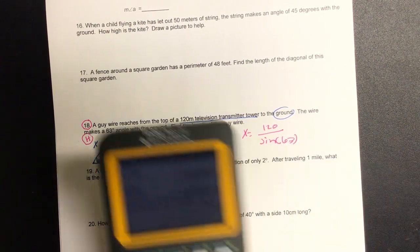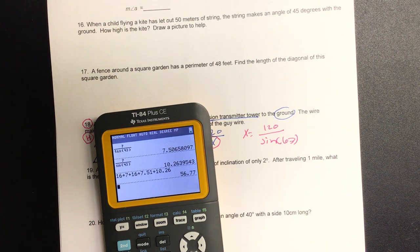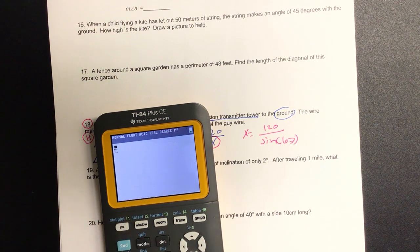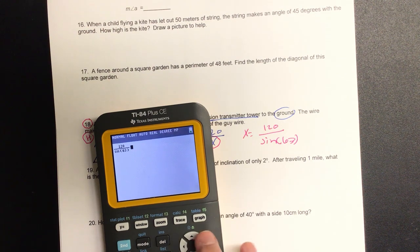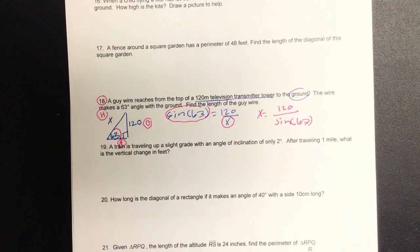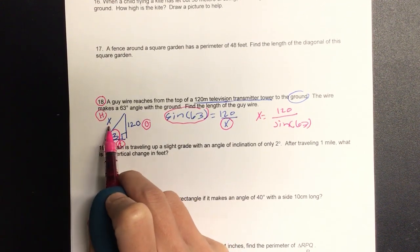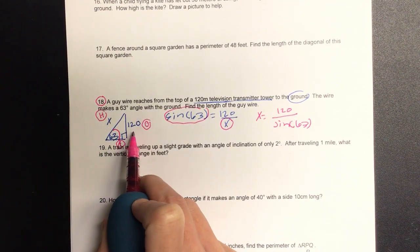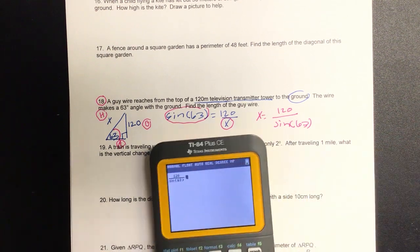The only downside is if you have this on a wrong mode, every single question will be wrong. One hundred twenty over sine of sixty-three. And let's kind of look at this logically. Because I'm looking for the hypotenuse, it has to be greater than one hundred twenty, right?